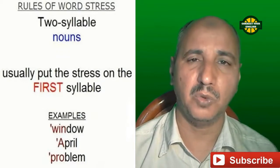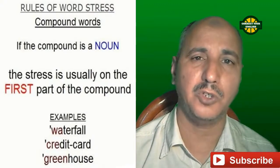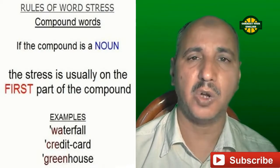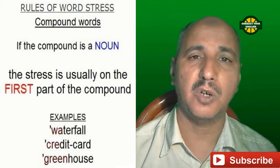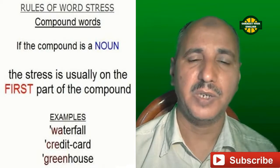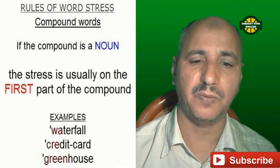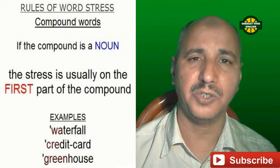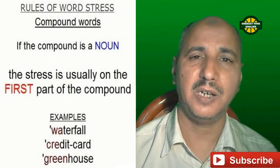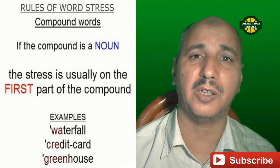Let's move to another rule — compound words. Compound words consist of two words. If the compound is a noun, the stress is usually on the first part of the compound. For example: 'waterfall' — the first syllable is pronounced louder and higher. We say 'waterfall,' not 'waterfall.' Next: 'credit card.' And 'greenhouse.' As you see, the stress is on the first part of the compound word.